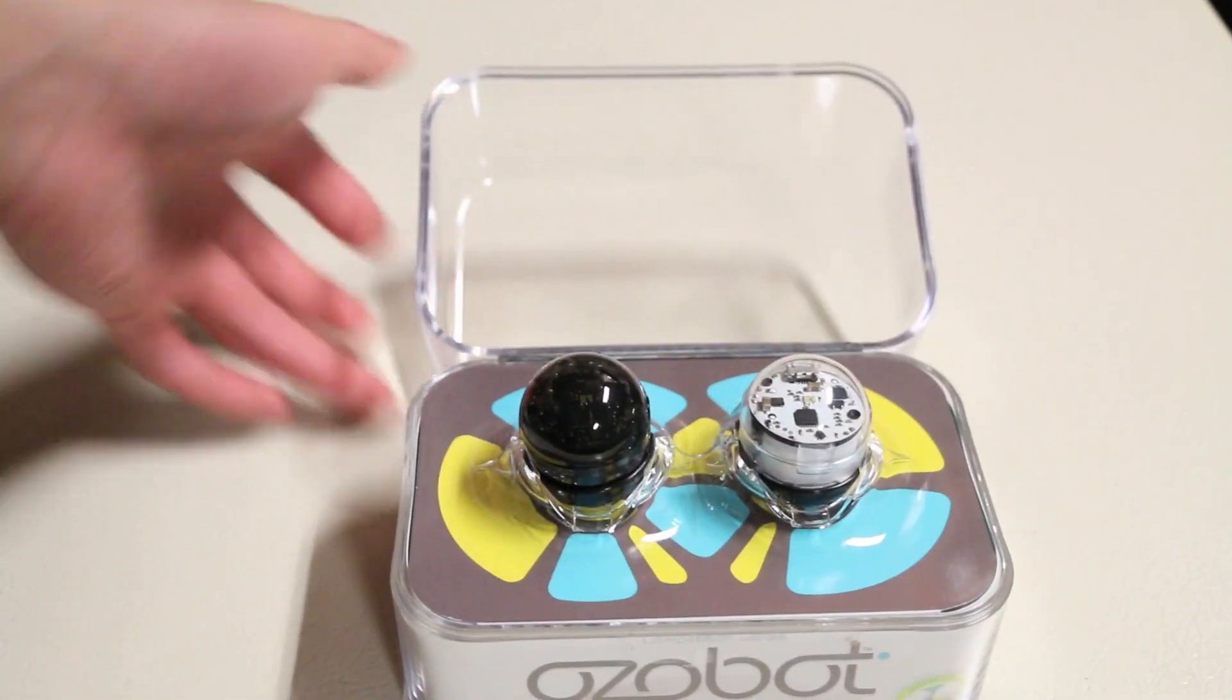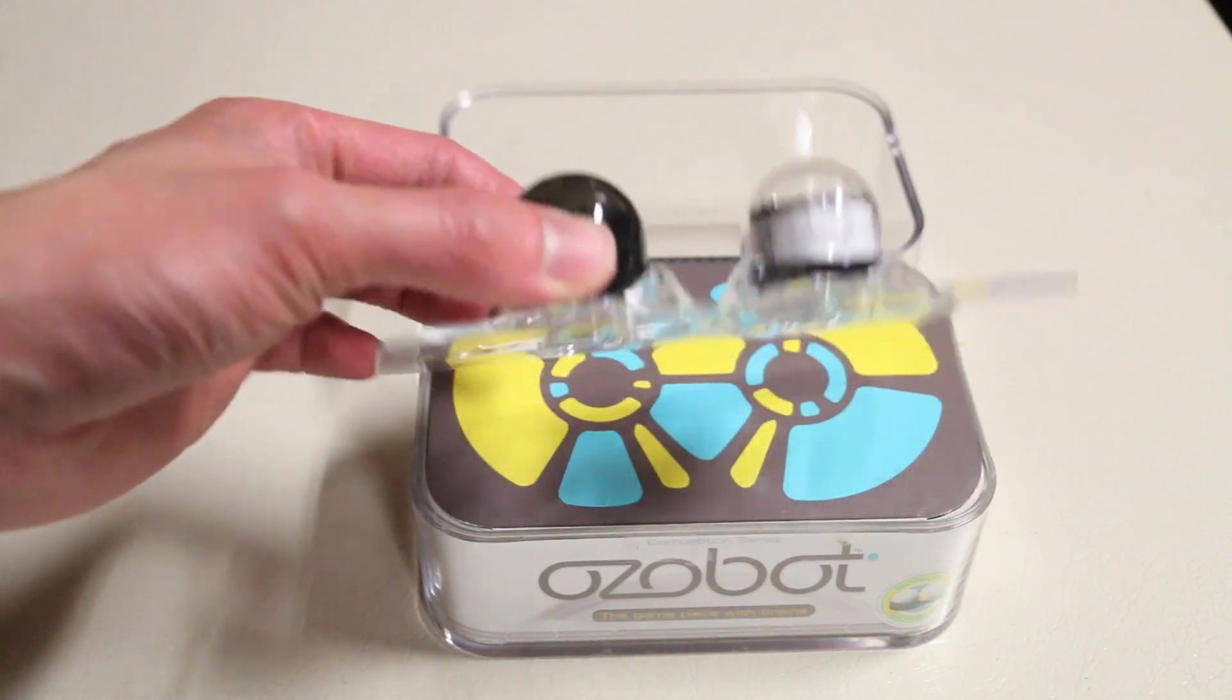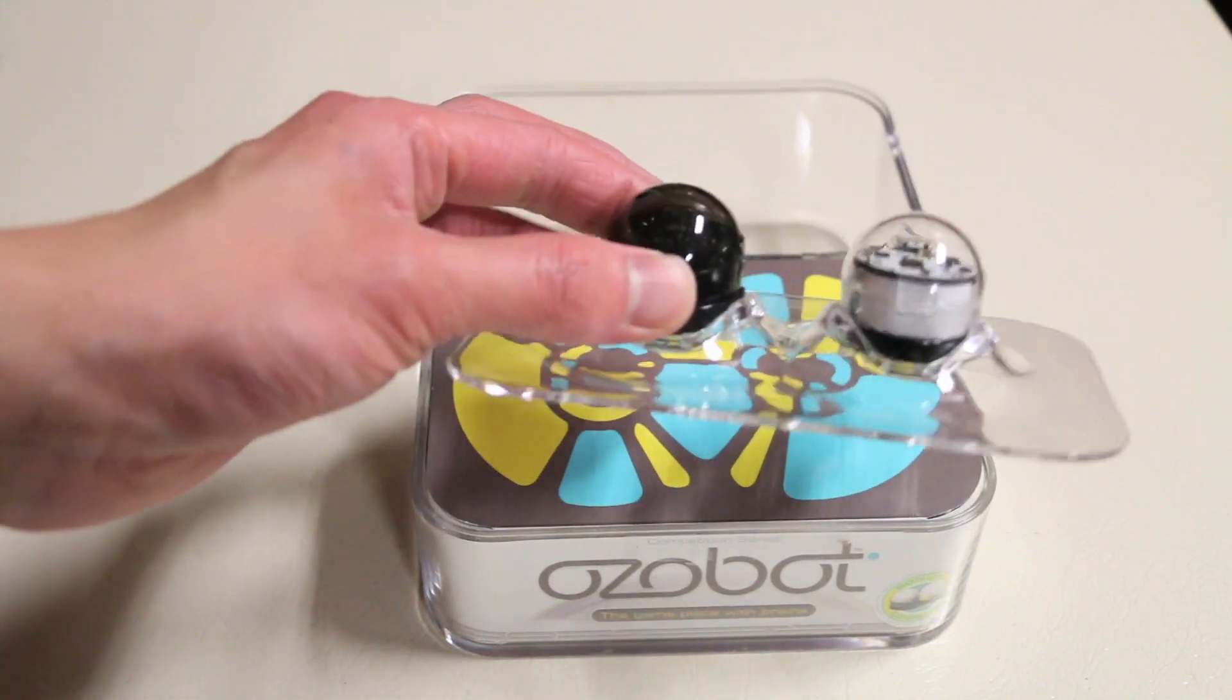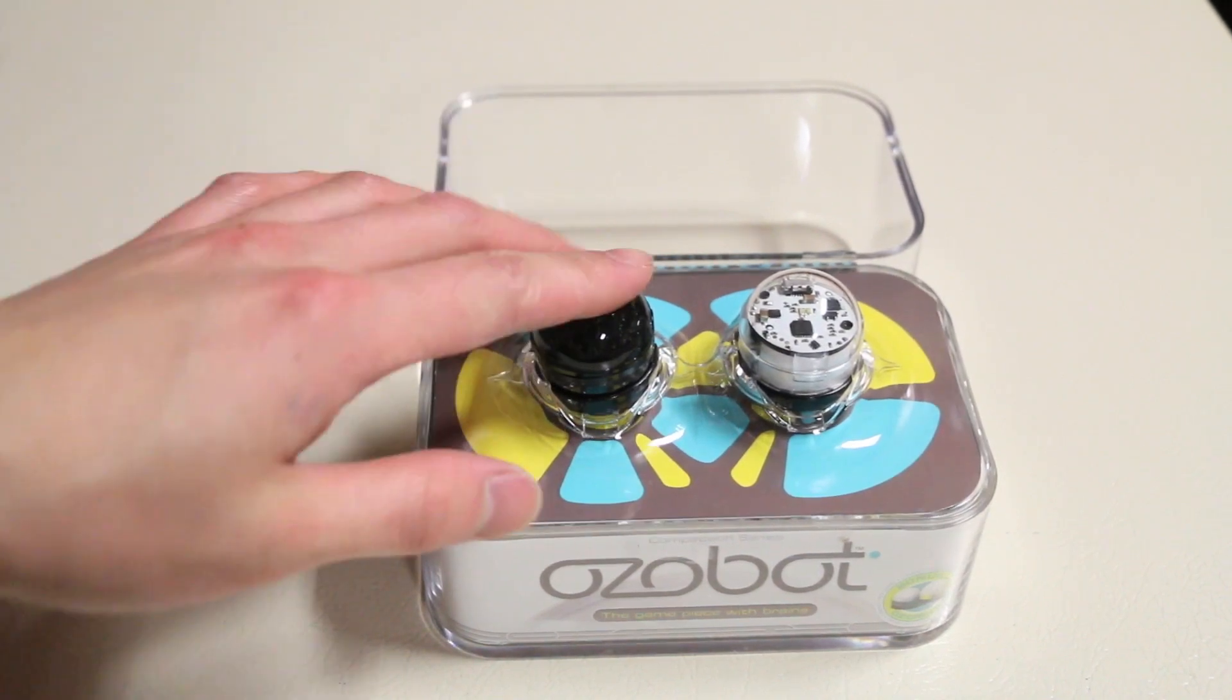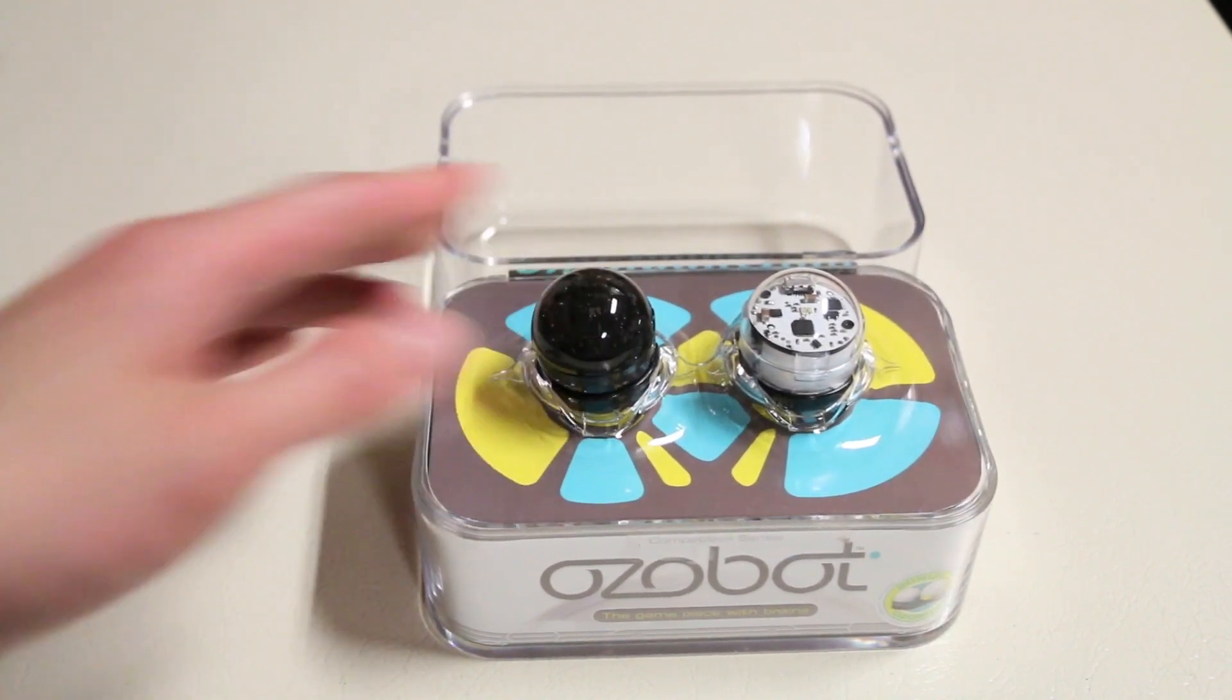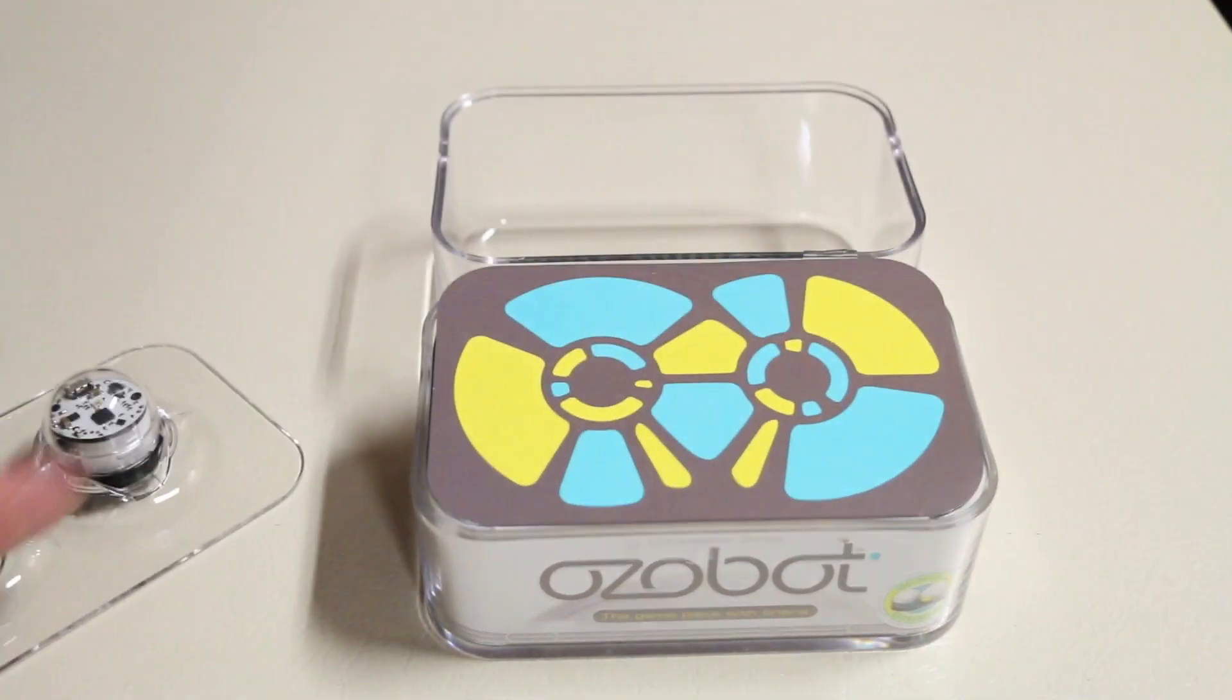Opens up like so, and of course the first thing we're introduced with are the Ozobots themselves, a clear model or white model you could call it, as well as a black model. These do also come in different packages, you can buy them individually for $49 or you can buy the two pack here for $99.